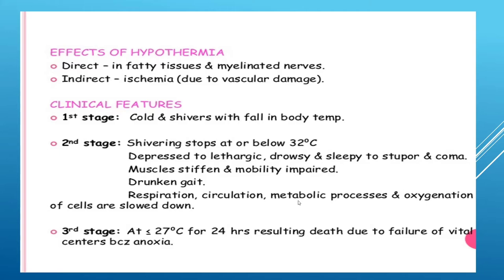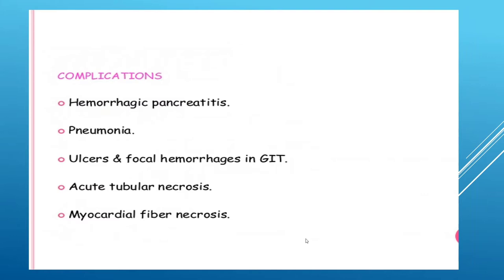Clinical features of hypothermia are divided into three stages. First stage: cold and shivering with a fall in body temperature. Second stage: shivering stops at or below 32 degrees centigrade; the person becomes depressed, lethargic, drowsy, and may progress to stupor or coma, with muscle stiffness, impaired mobility, and drunken gait; respiration, circulation, and metabolic processes are all very slow. Third stage: at around 27 degrees centigrade, after at least 24 hours of exposure, death may result from failure of vital centers due to anoxia.